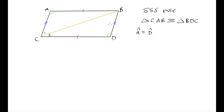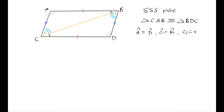I'm going to label the angles C1, C2, B1, and B2. Because these triangles are congruent, we know that angle A is equal to angle D. The corresponding angle C1 is equal to angle B1, and angle C2 is equal to angle B2. Those are the corresponding angles on our two congruent triangles.